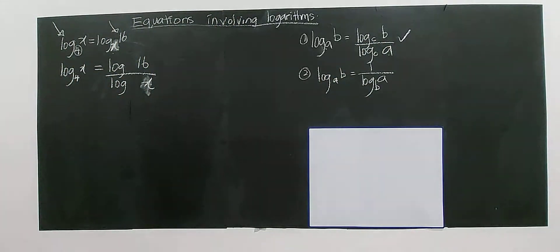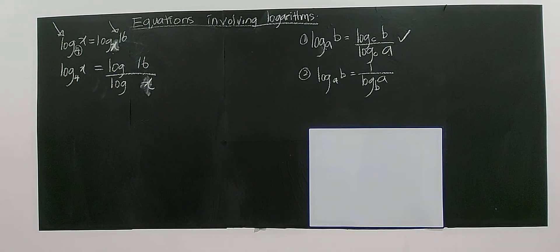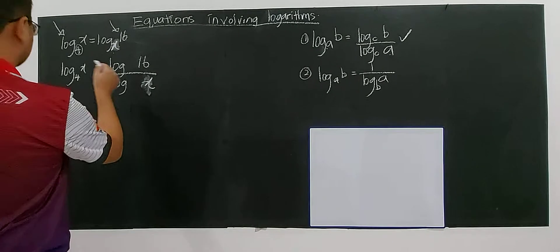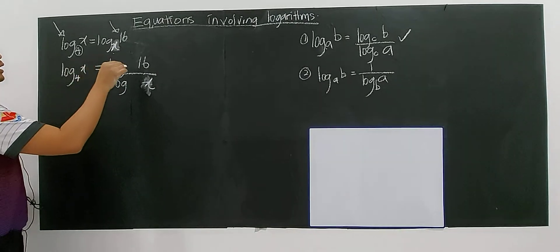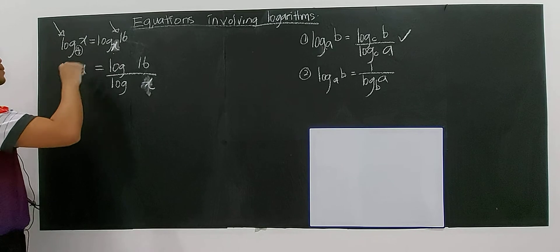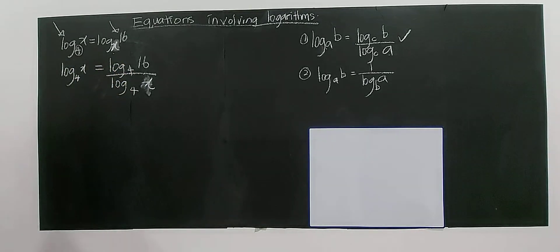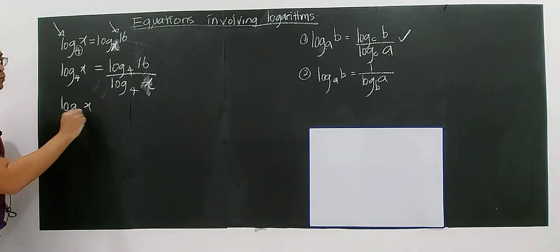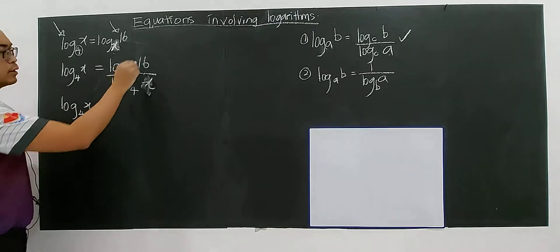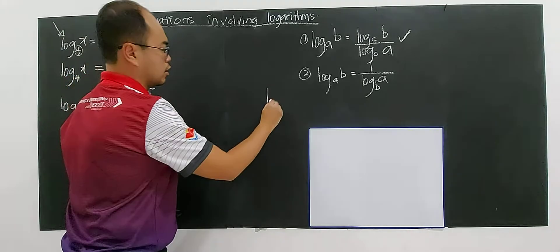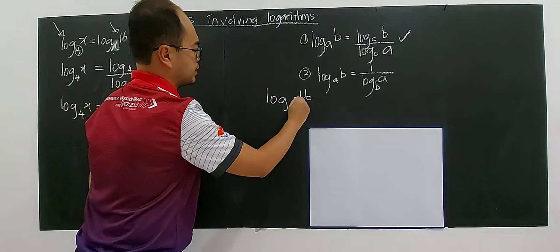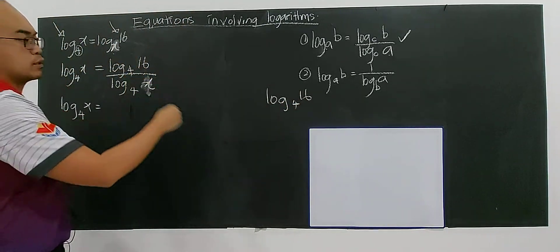What's the suitable base here? Of course it must be 4, because I'm going to change such that it can have the same base with this 4. So I put 4. Now you can see, it's very easy later. Log X base 4. I want to simplify this one.